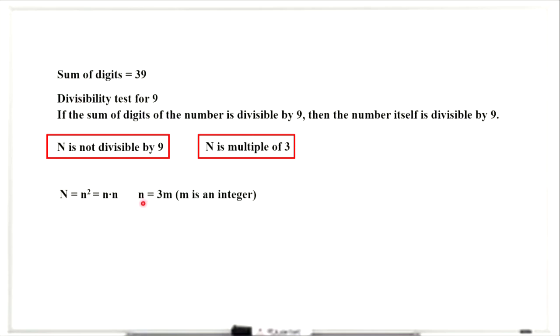We represent n as 3 times another integer m. Taking our assumption and plugging n into the right-hand side, we have that N equals 3m squared, or 9m squared.